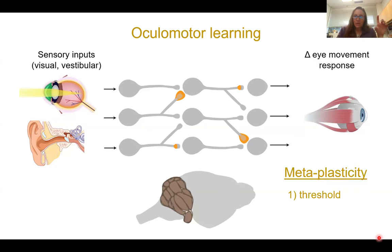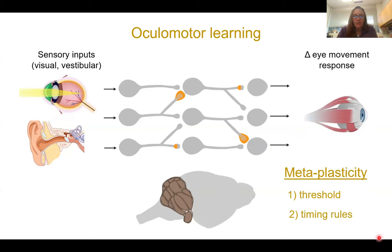Today I'll tell you how, in trying to connect those dots, we stumbled upon evidence for two kinds of metaplasticity at cerebellar synapses. First, I'll talk about threshold metaplasticity — experience-dependent changes in how hard or easy it is to induce plasticity. And in the second part, I'll talk about plasticity of the timing rules for plasticity: changes in threshold and timing requirements for inducing associative plasticity and learning.